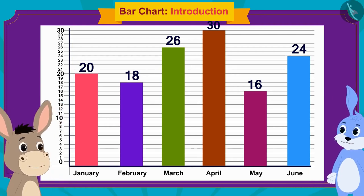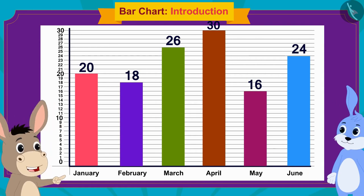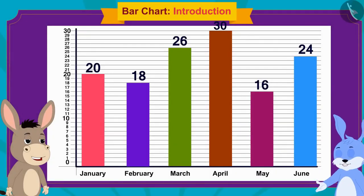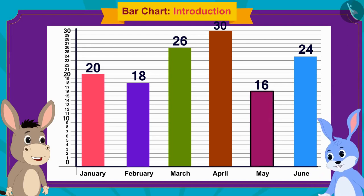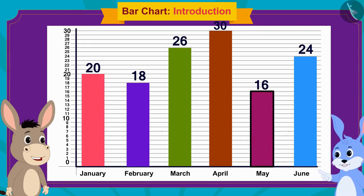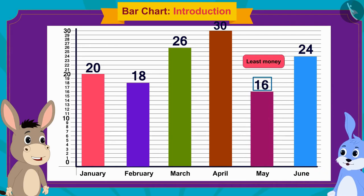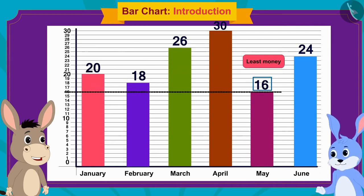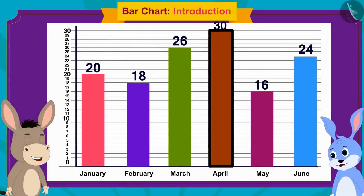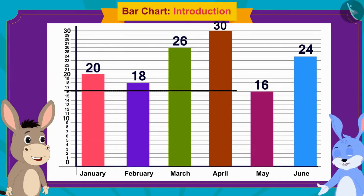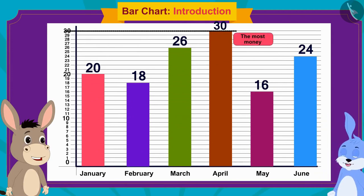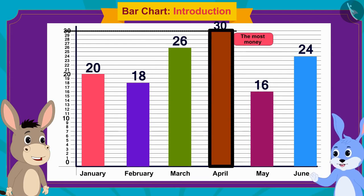Now, can you tell me in which month you saved the least amount of money? Now it has become very easy. The month of May has the smallest rectangle — which means I saved the least money, 16 rupees, in the month of May. And look — the month of April has the longest rectangle. That means I saved the most money, 30 rupees, in the month of April.